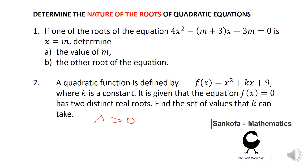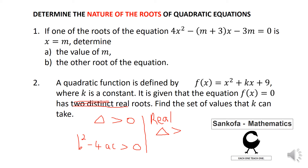You should definitely know the distinction when given questions where they say the equation has two distinct real roots. When it has two distinct real roots, then your discriminant D should be greater than 0. So B² minus 4AC, which is your discriminant, should be greater than 0, because your roots will be two unequal roots. But if the question just says 'real' without specifying 'distinct', then delta would be greater than or equal to 0, because delta can also equal 0.